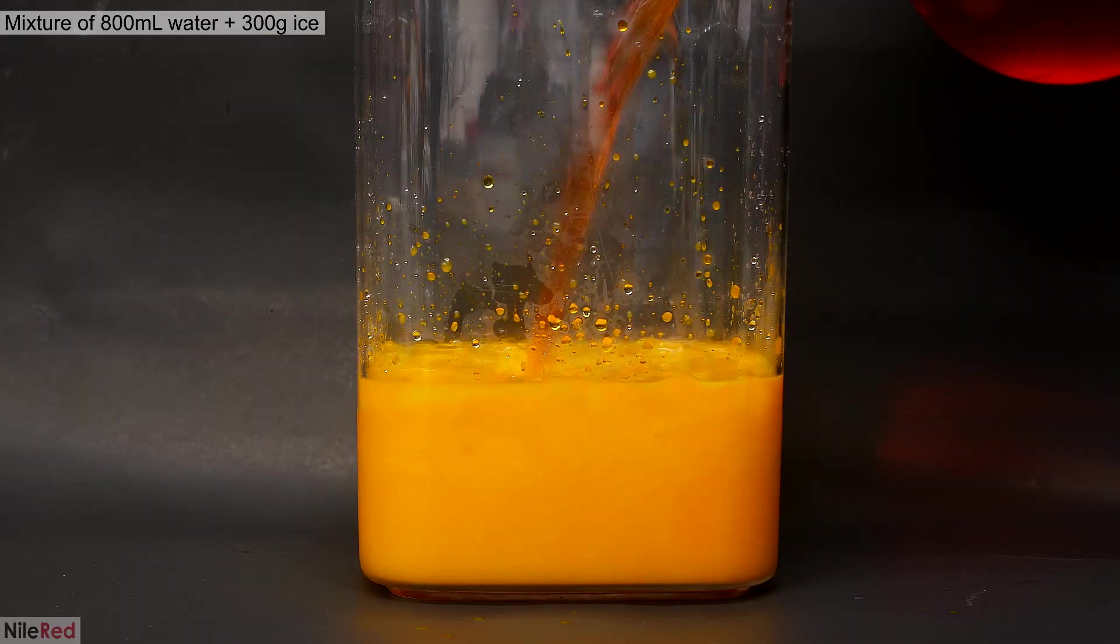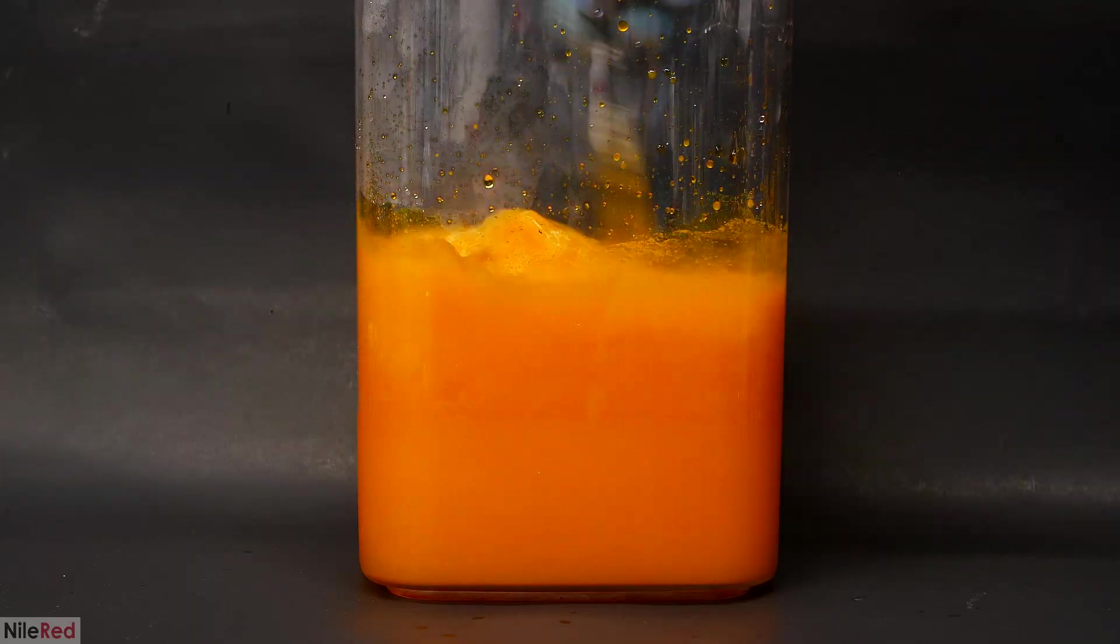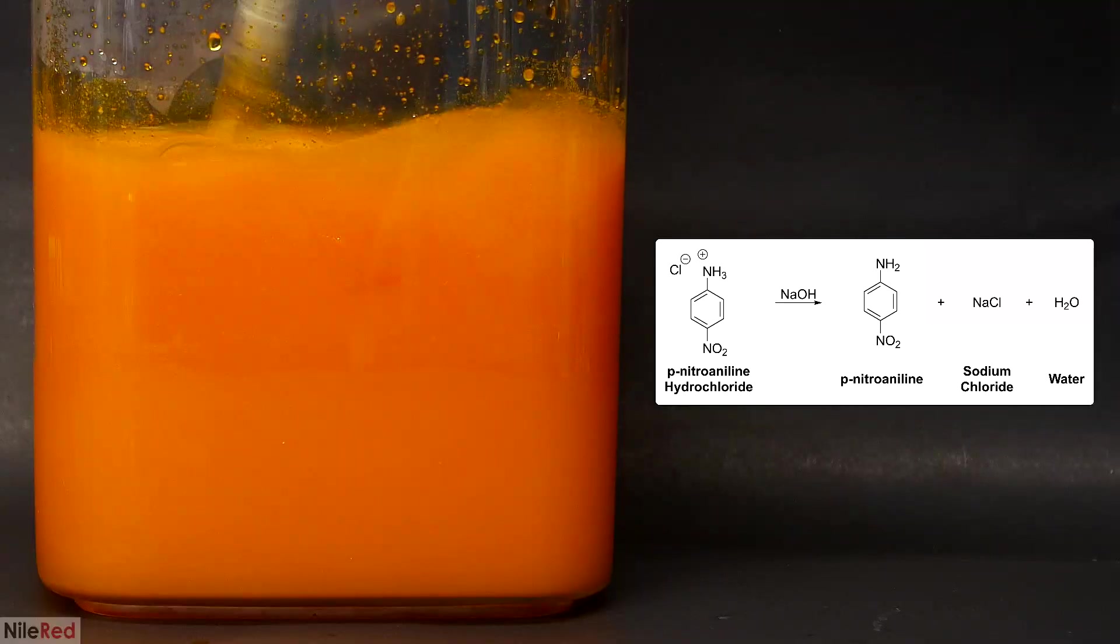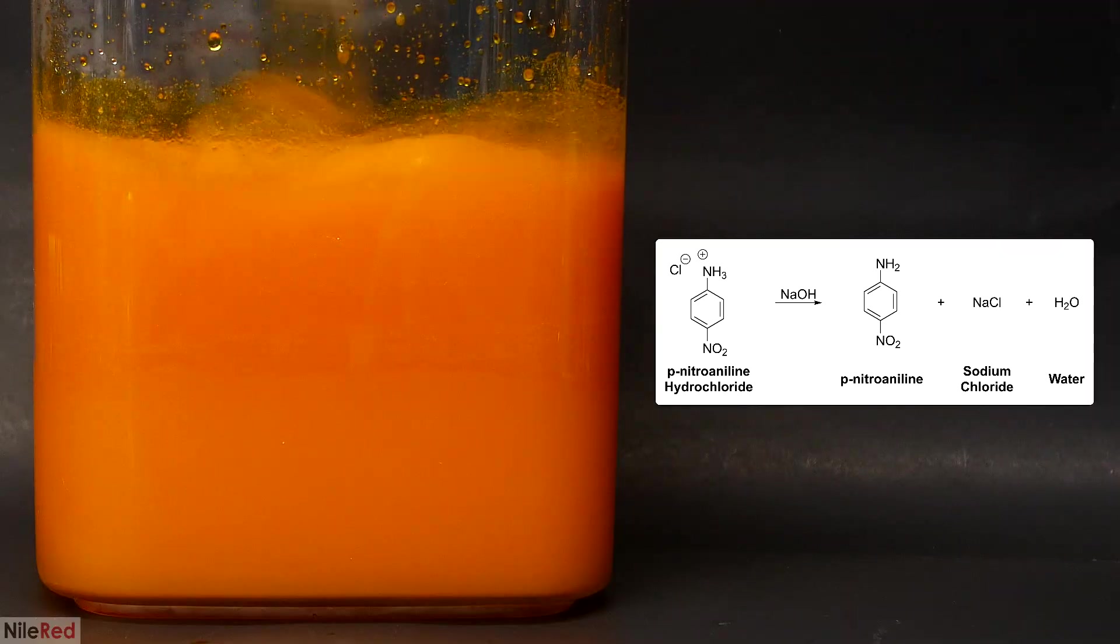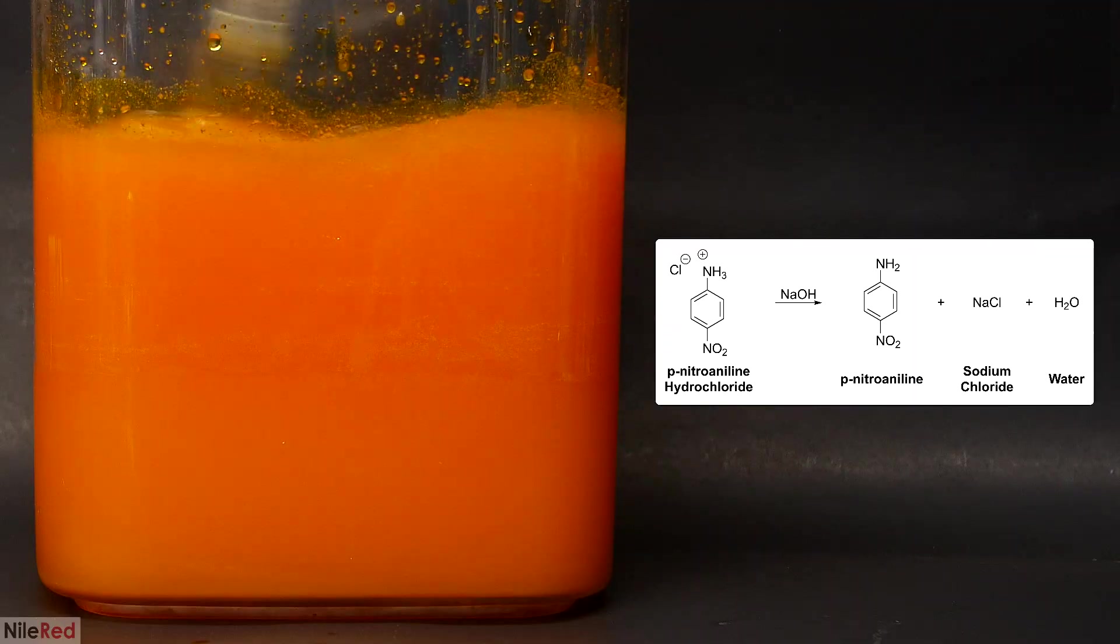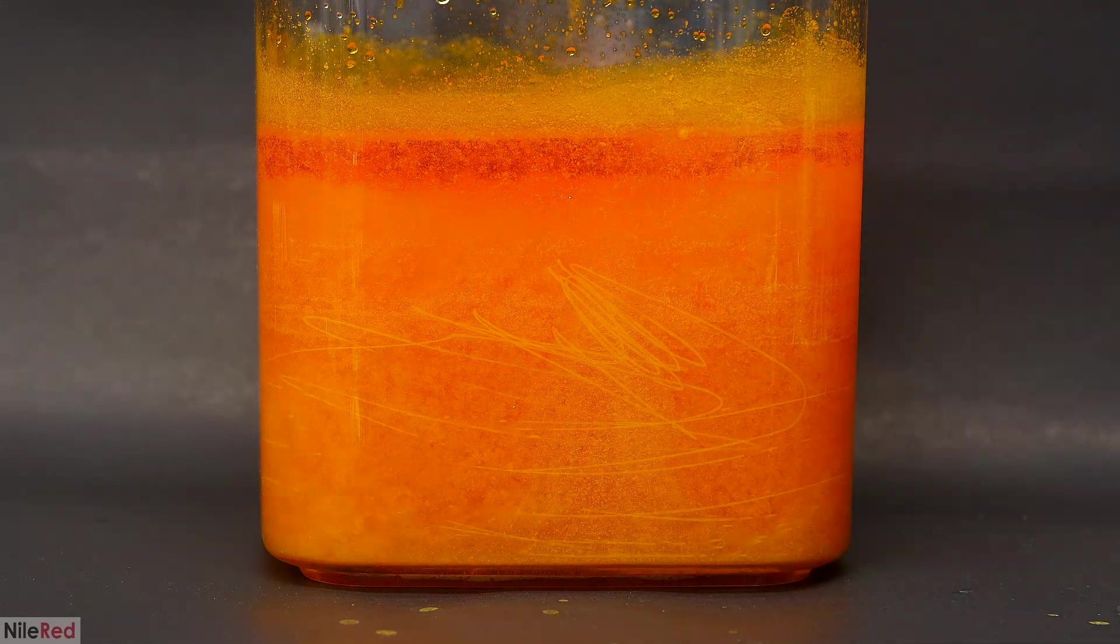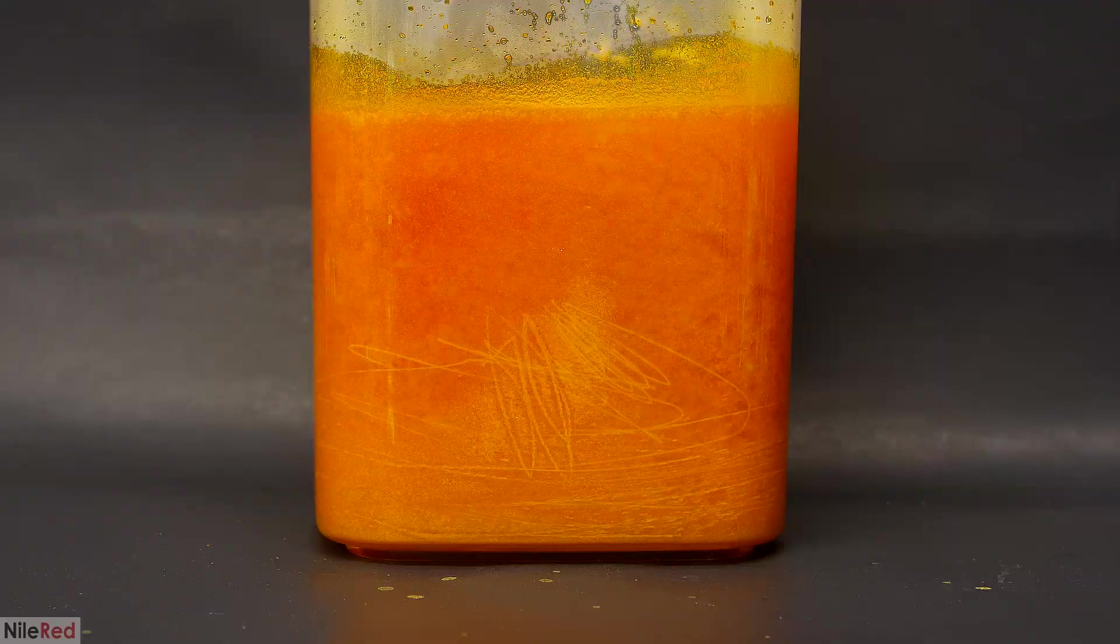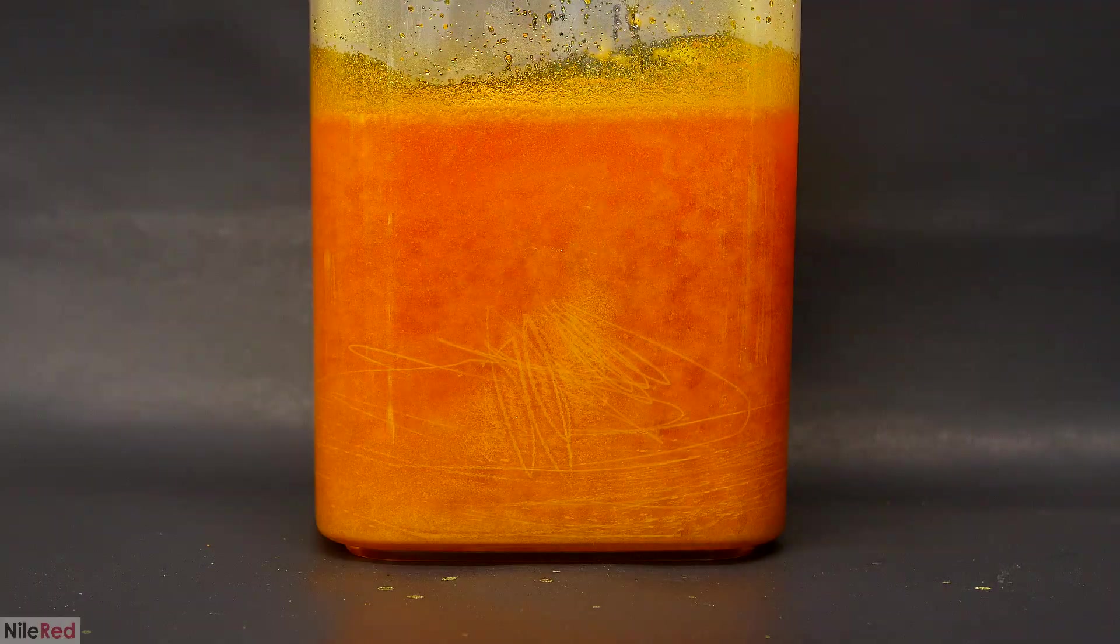Then I prepare a mixture of ice and water and I dump everything in. I give everything a good mix and then I check the pH. As expected, it's really acidic. As I mentioned before, what we have in these acidic conditions is P-nitroaniline hydrochloride, but we want the freebase version. So to free it up, I need to neutralize all the acid and make this mixture basic. I whip up a really strong solution of sodium hydroxide and I just keep dumping it in and checking the pH. Eventually, all the acid is gone and the solution is pretty strongly basic, so at this point I'm done.